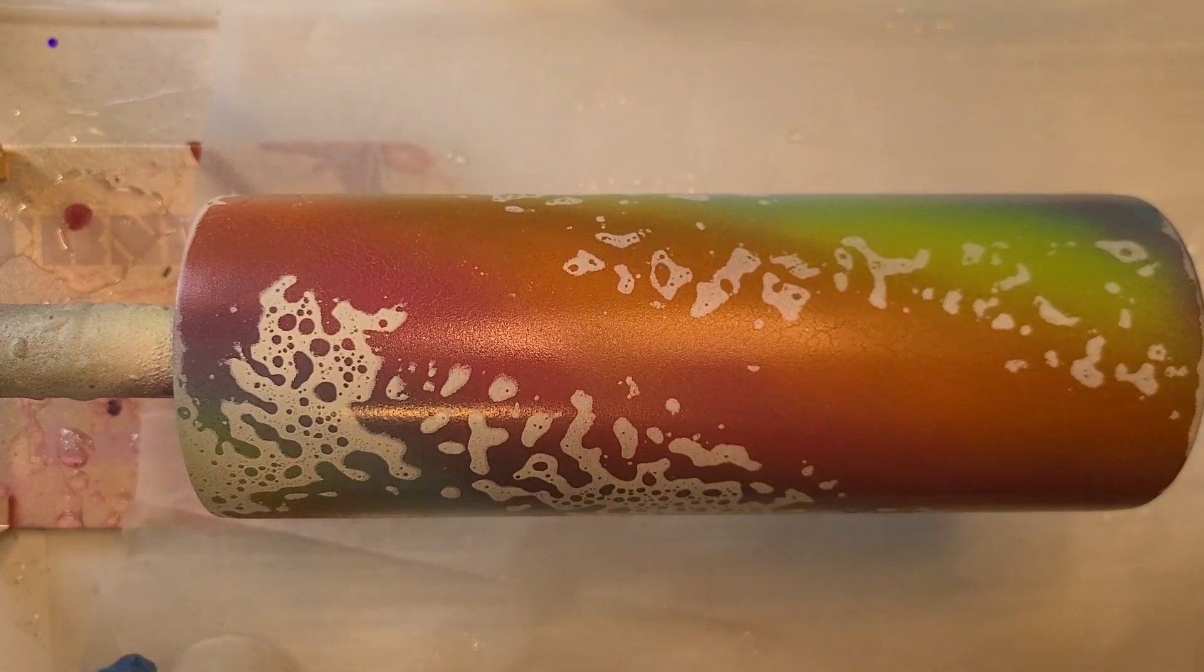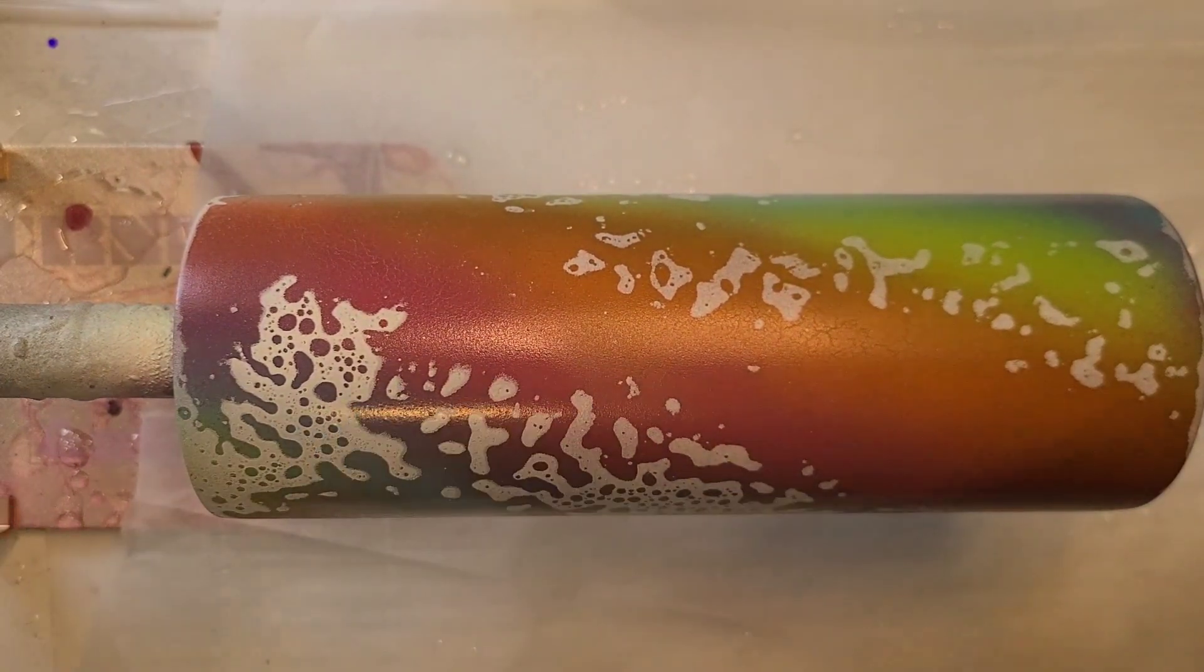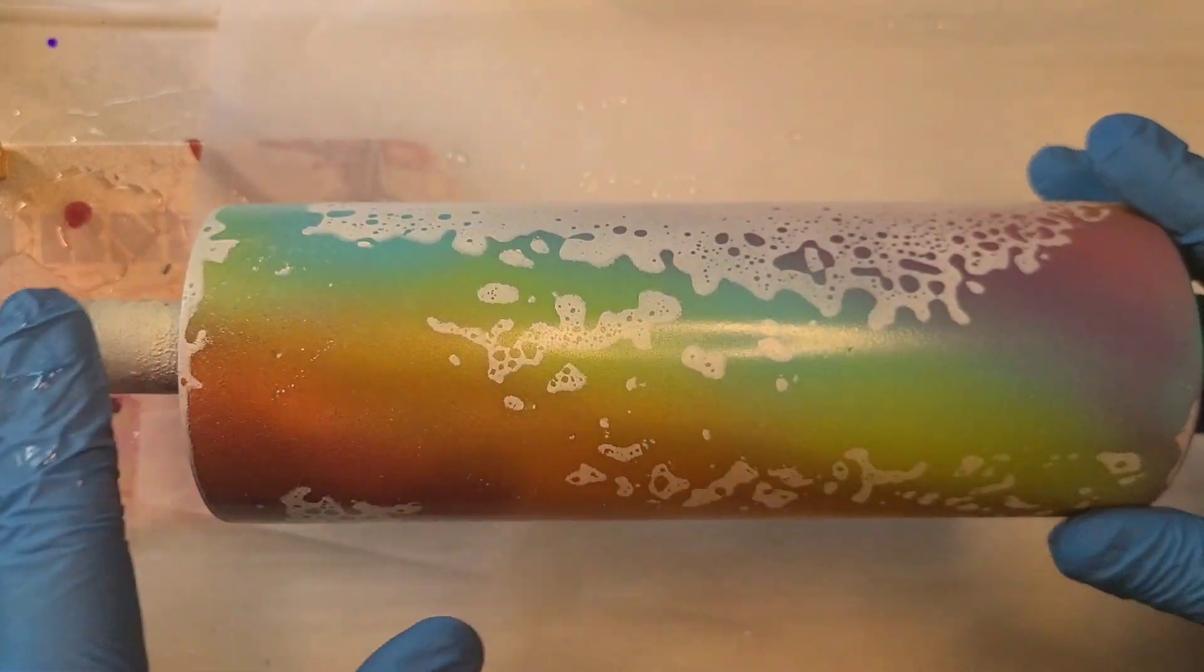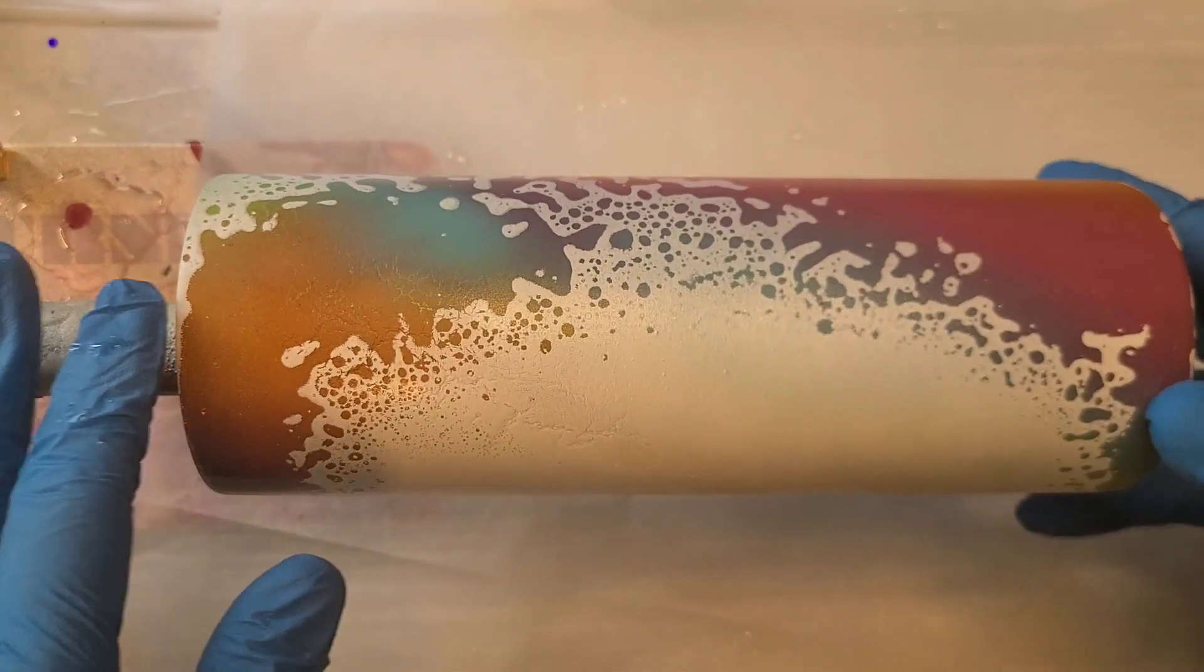But to get to this point, I took six colors of spray paint: a pink, an orange, a yellow, a green, a blue, and a purple, and just spray painted it in stripes.